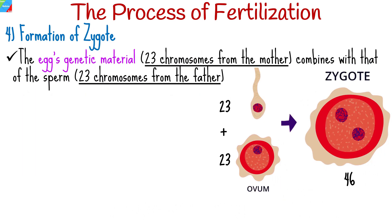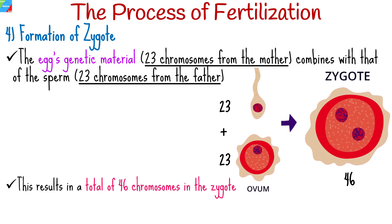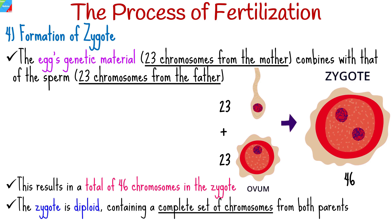Once a sperm successfully fuses with the egg, the egg's genetic material, which includes 23 chromosomes from the mother, combines with that of the sperm, which also includes 23 chromosomes from the father, resulting in a total of 46 chromosomes in the zygote. The zygote is diploid, containing a complete set of chromosomes from both parents. This new cell begins to divide through mitosis, forming a multicellular structure.